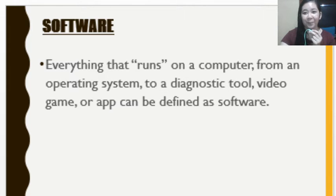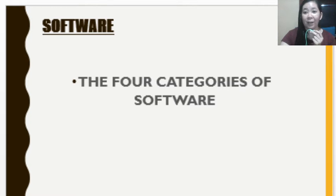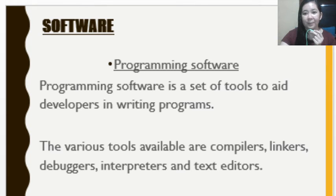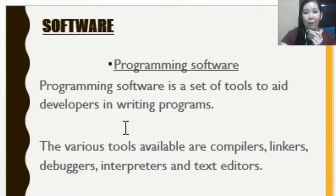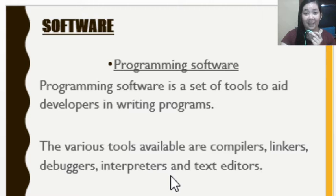There are four categories of software. The first is programming software. This is a set of tools to aid developers in writing or creating a program. The various tools available include compilers, linkers, debuggers, interpreters, and text editors. This is the main function of programming software.